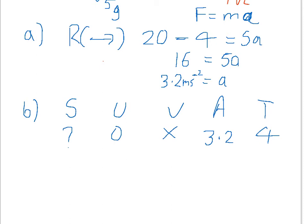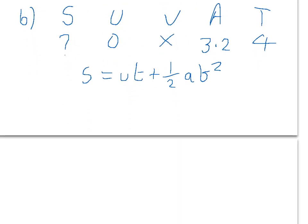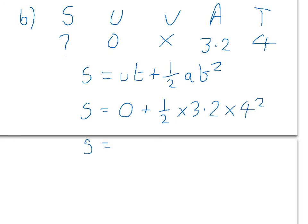That equation is S equals UT plus one-half AT squared. Substituting the parts we know: S is what we're finding, U is 0, so 0 times anything is 0, plus one-half times 3.2 times 4 squared. Solving that, we find the distance travelled is 25.6 metres.